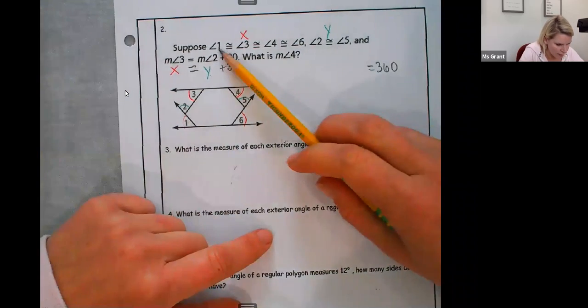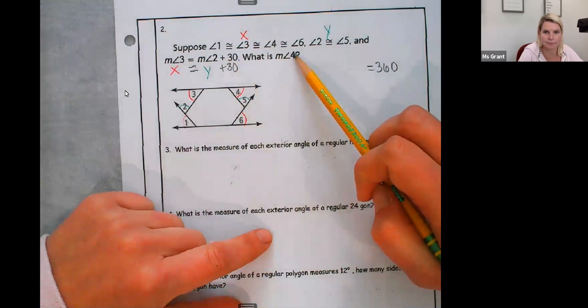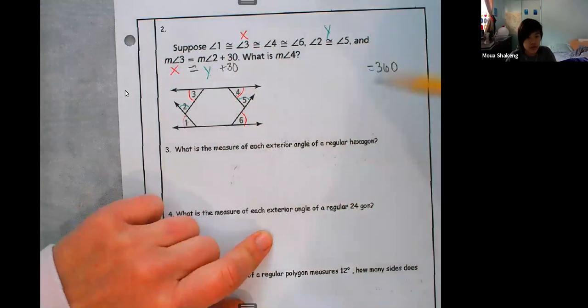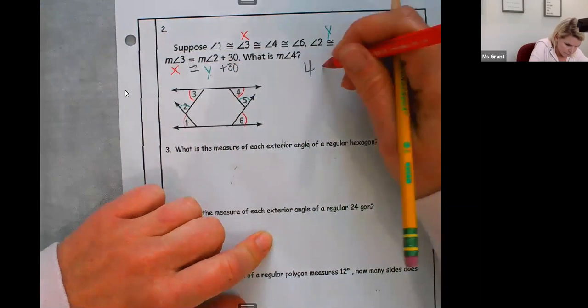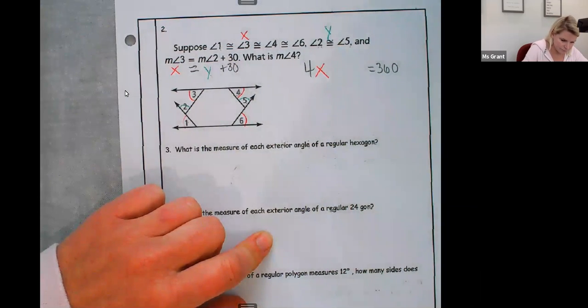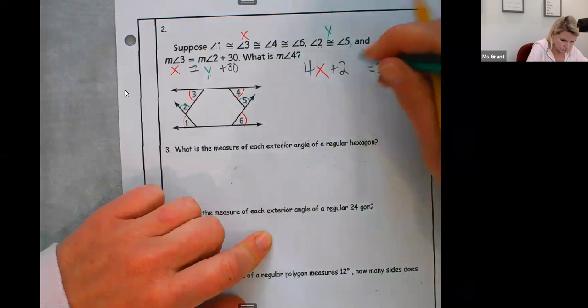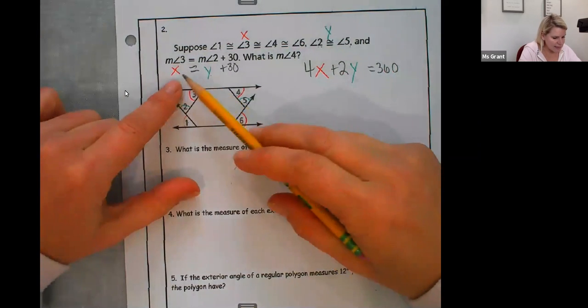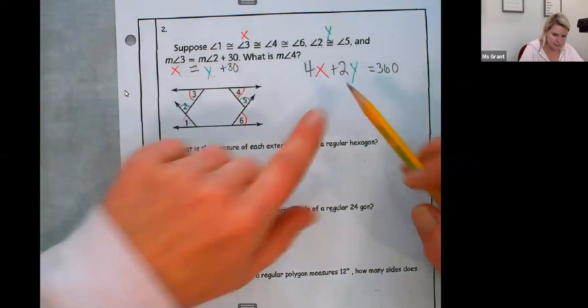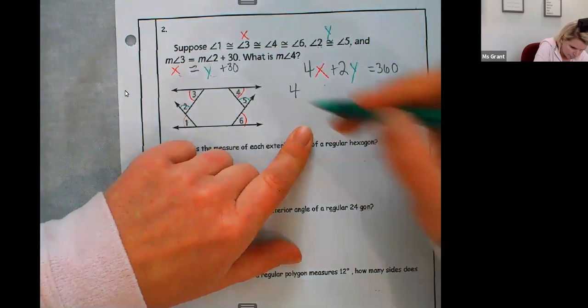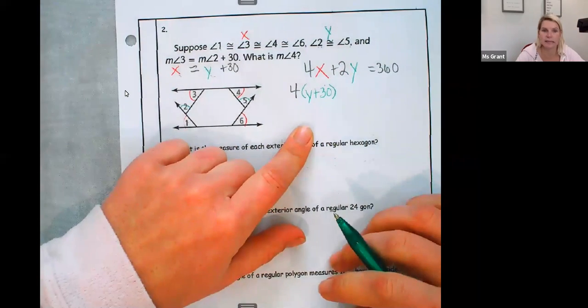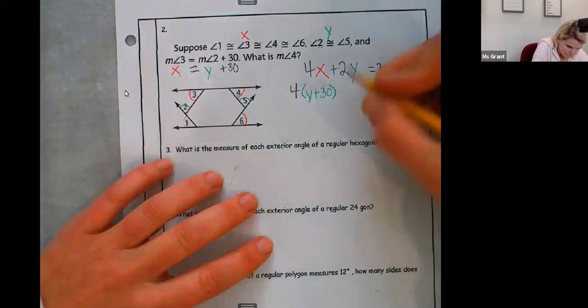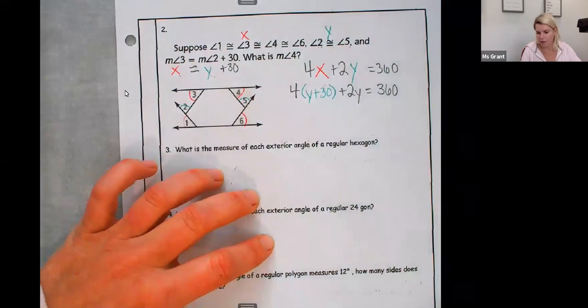So all of these one plus two plus three plus four plus five plus six equal 360. So what can I say about one, three, four, and six? They're all the same, four X. And then two and five are the same, there's two of them, 2Y. So four of the same size plus two of the other same size equals 360. And then I need to look at this: X equals Y plus 30. So instead of X, why don't I put Y plus 30 instead of X? Because isn't X equal to Y plus 30?